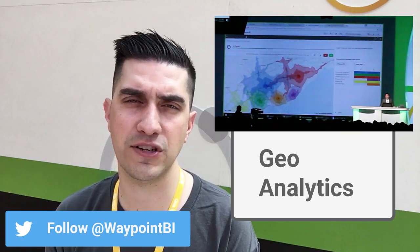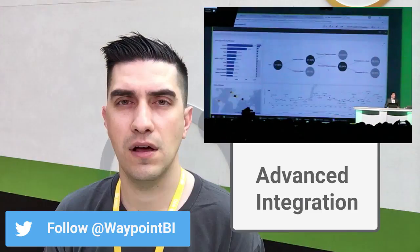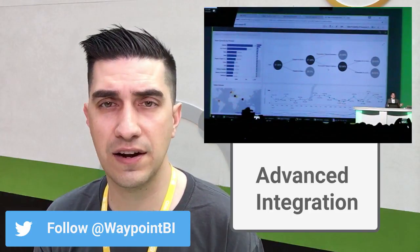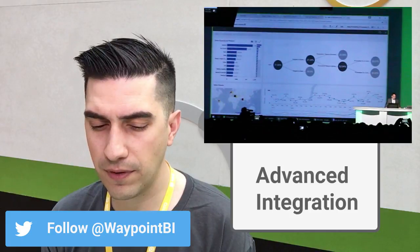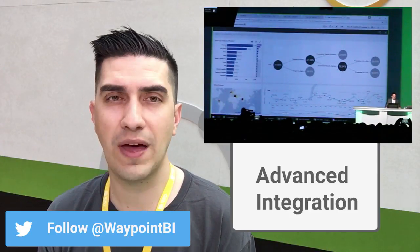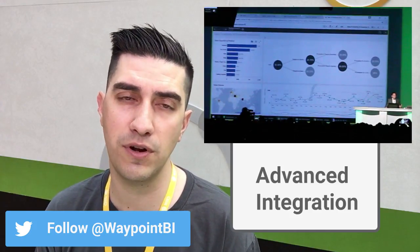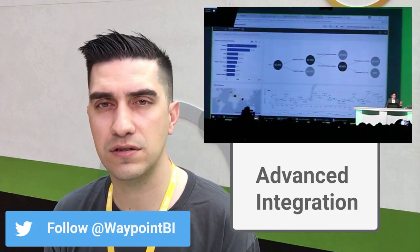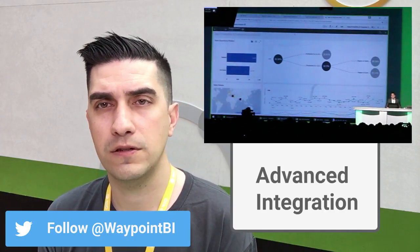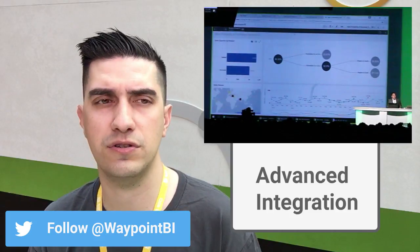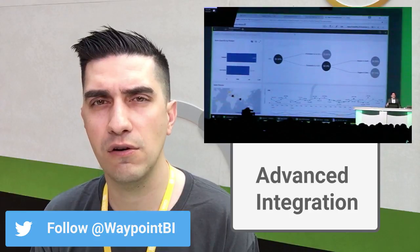Another big update is Advanced Analytics Integration. Qlik has essentially opened up APIs to allow you to communicate with other engines — R, Python, or Spark — in real time. This is going to be huge for all of the add-ons and extensions, opening up new possibilities for developers.